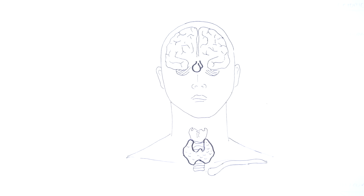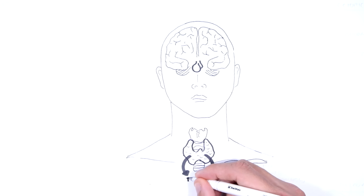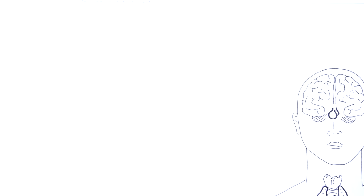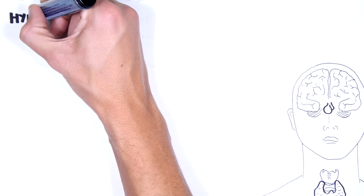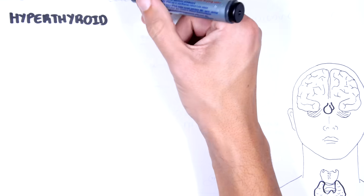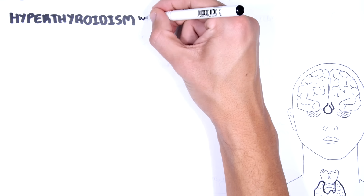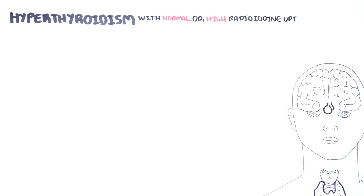Causes of hyperthyroidism can be divided into two groups. One group is where you have increased synthesis of thyroid hormones, of whatever cause. This group is called hyperthyroidism with normal or high radioiodine uptake, because increased thyroid hormone synthesis requires an increase in iodine uptake.